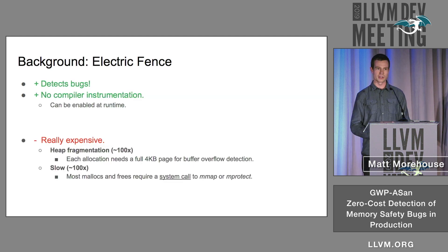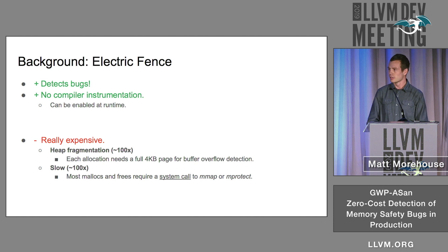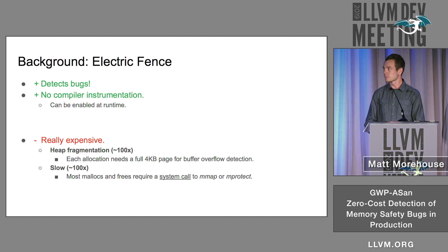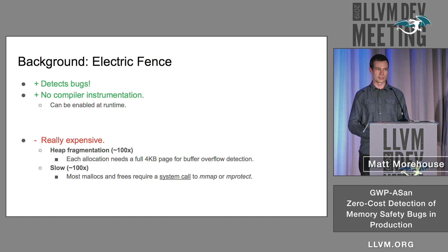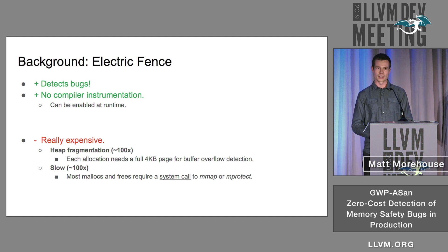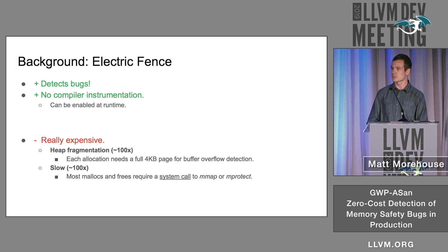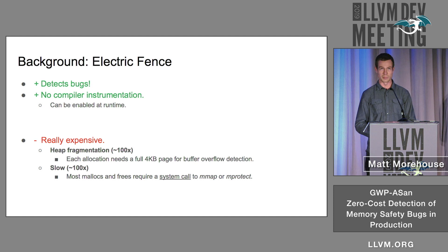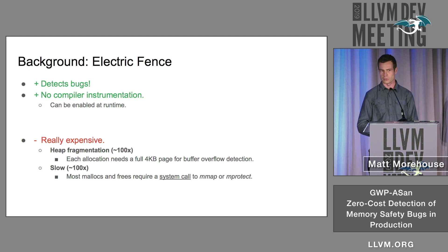This finds bugs and does so without any compile-time instrumentation, meaning you can turn Electric Fence on and off at runtime. However, it's quite expensive because each allocation now requires a full page of memory for overflow detection, and most calls to malloc and free now require a system call. So a malloc or free that used to take a couple dozen nanoseconds will now take a few microseconds instead.